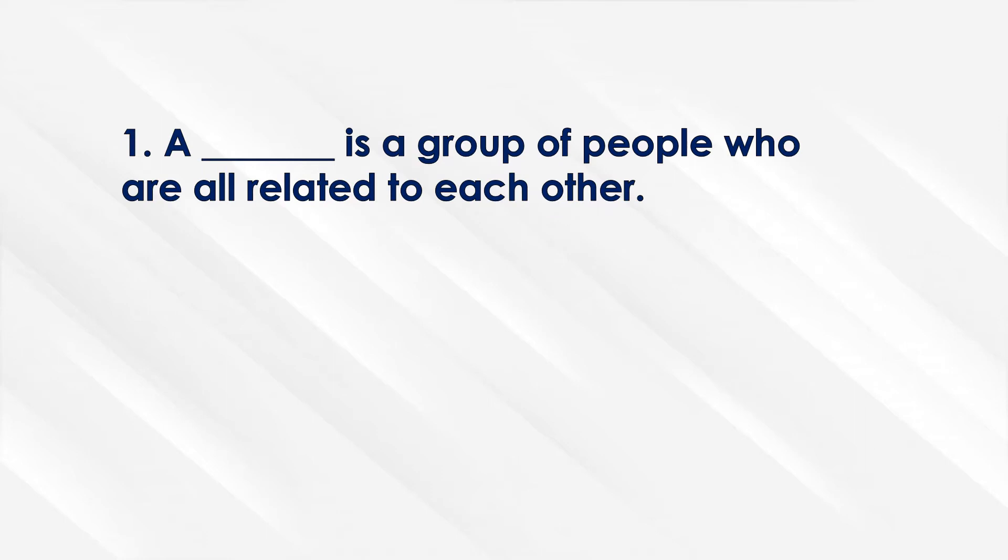Number 1. A blank is a group of people who are all related to each other. What's your answer? And the correct answer is Family. A family is a group of people who are all related to each other.